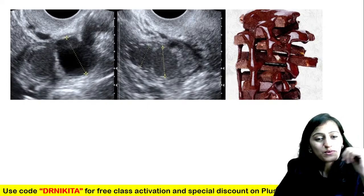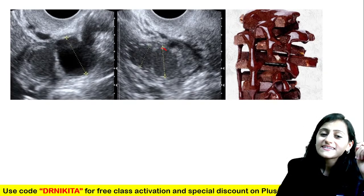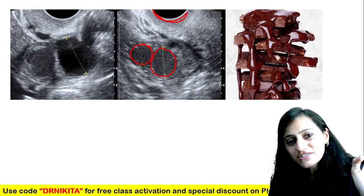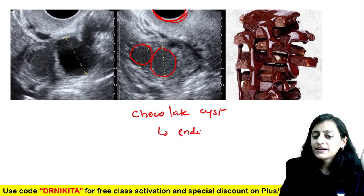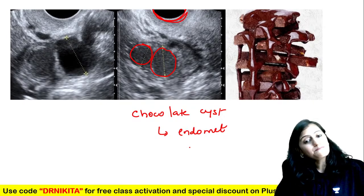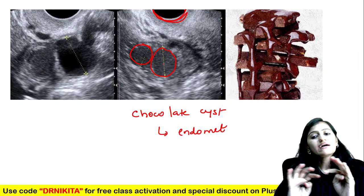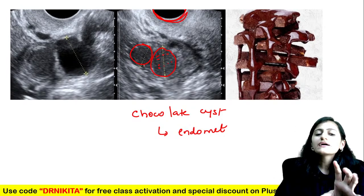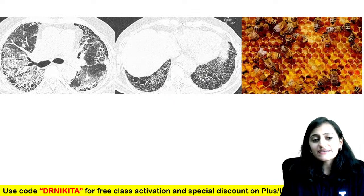This is the chocolate cyst in the ovary, seen on transvaginal sonography — this is endometriosis. Why is it a chocolate cyst and not a simple cyst? Simple cyst has clear fluid appearing black on ultrasound. Here the cyst has multiple low-level echoes, indicating a hemorrhagic cyst — that is the chocolate cyst of endometriosis.